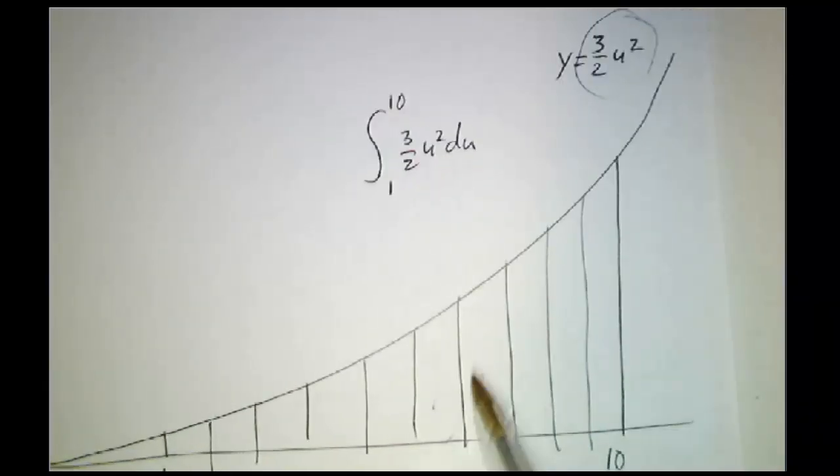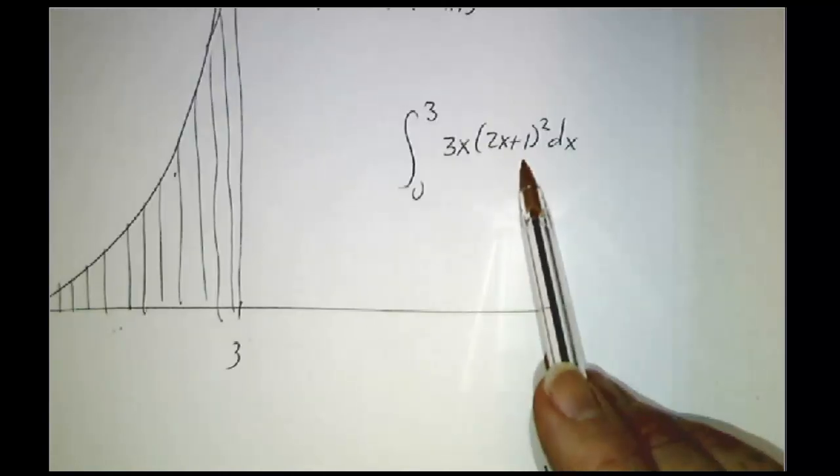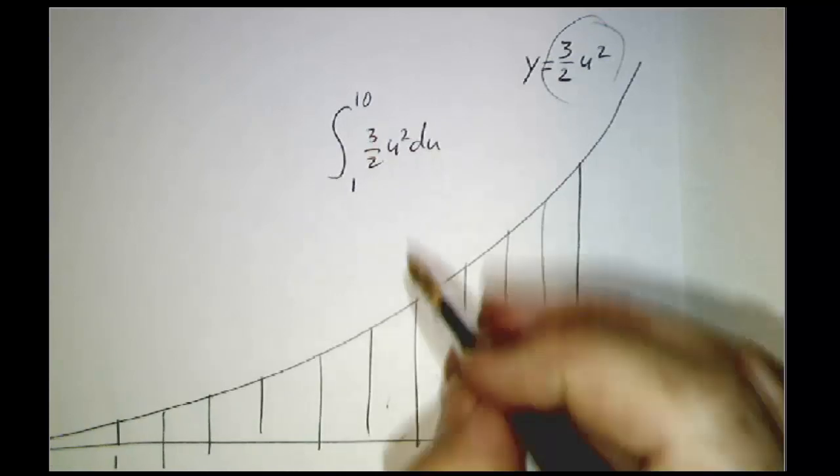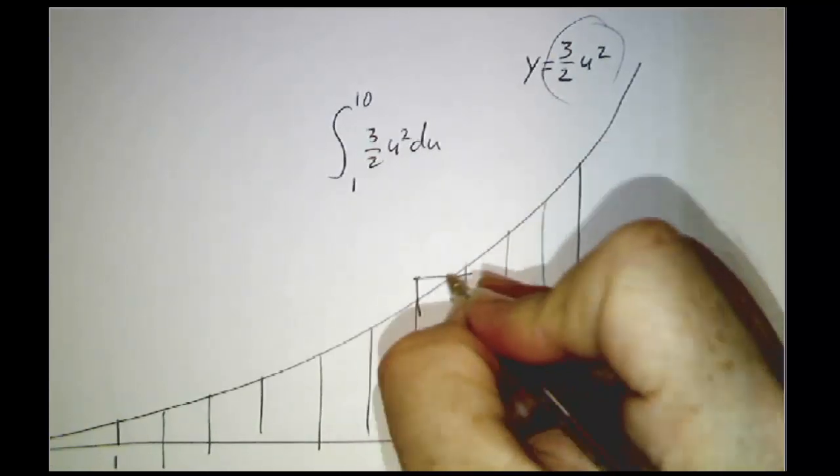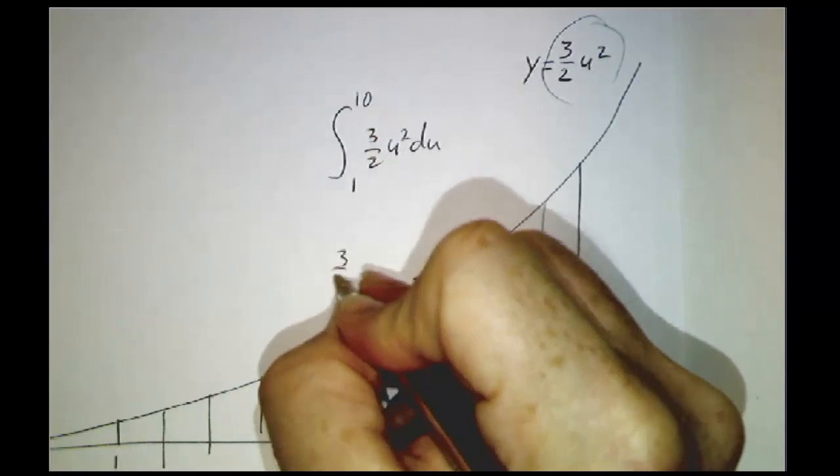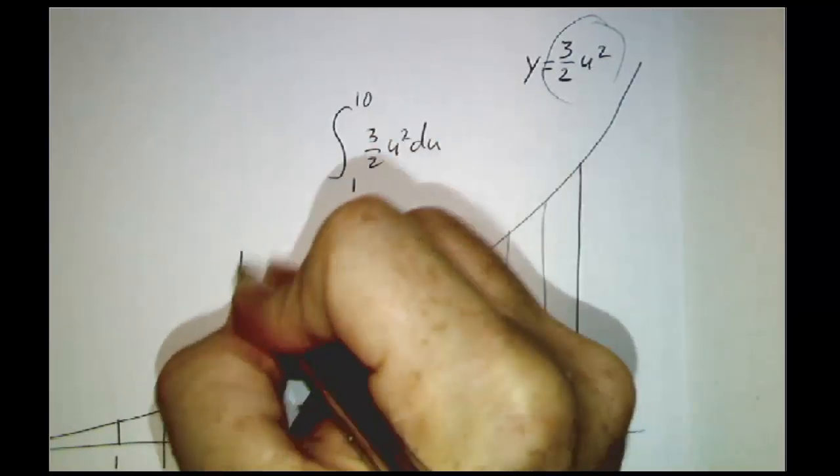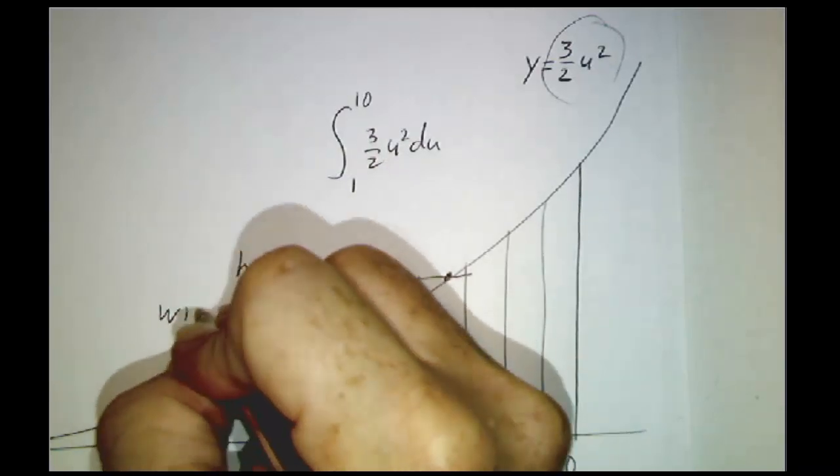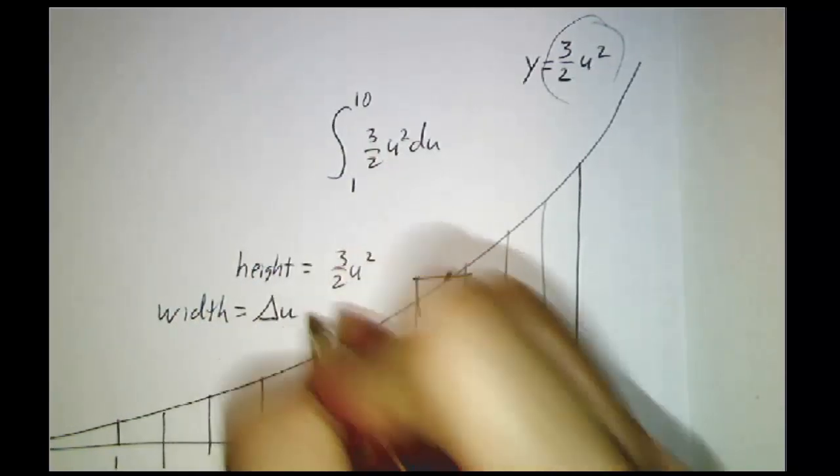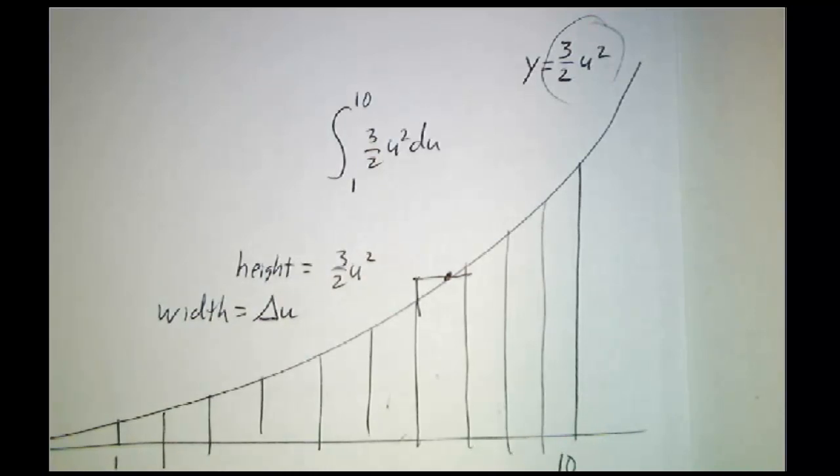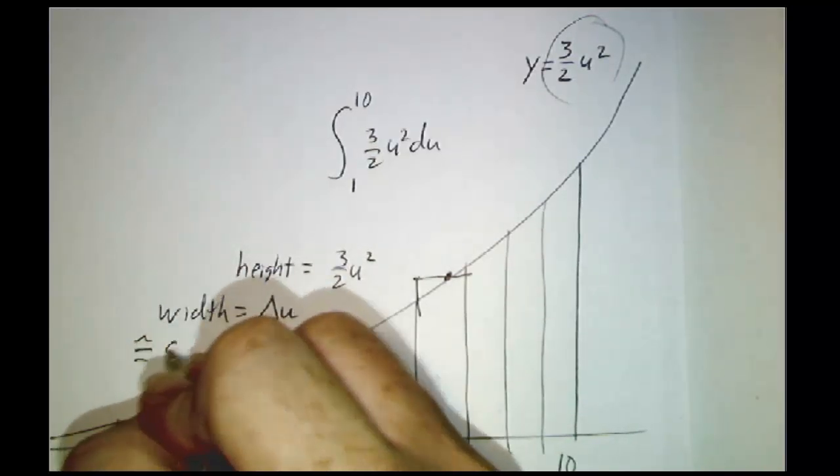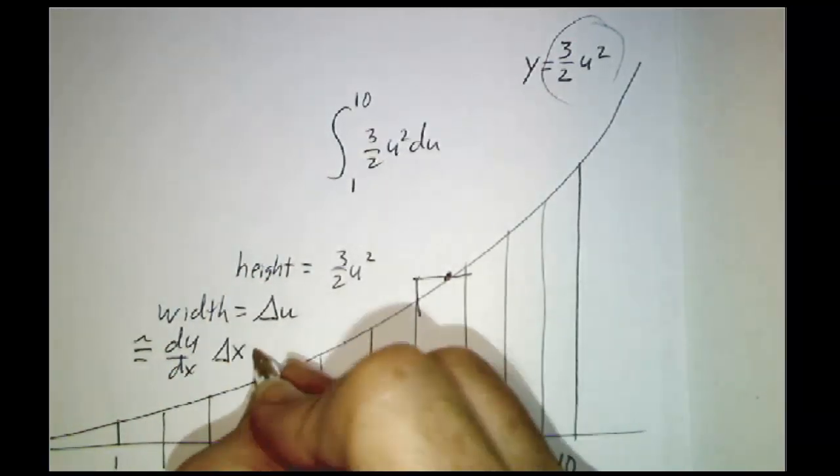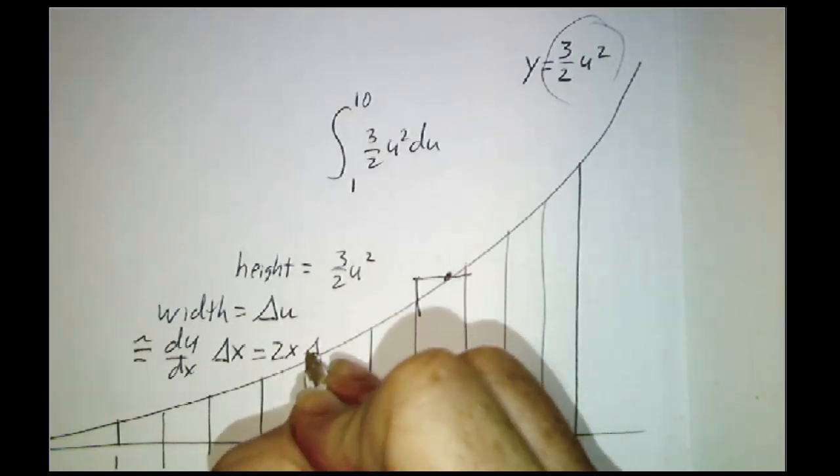And we want to compare this integral to this integral. Well, let's figure out the area of each of these strips. The height of the strips is just 3 halves u squared. That's the height. The width is delta u. But delta u is approximately du dx times delta x. In other words, it's 2x. In other words, it's 2x delta x.